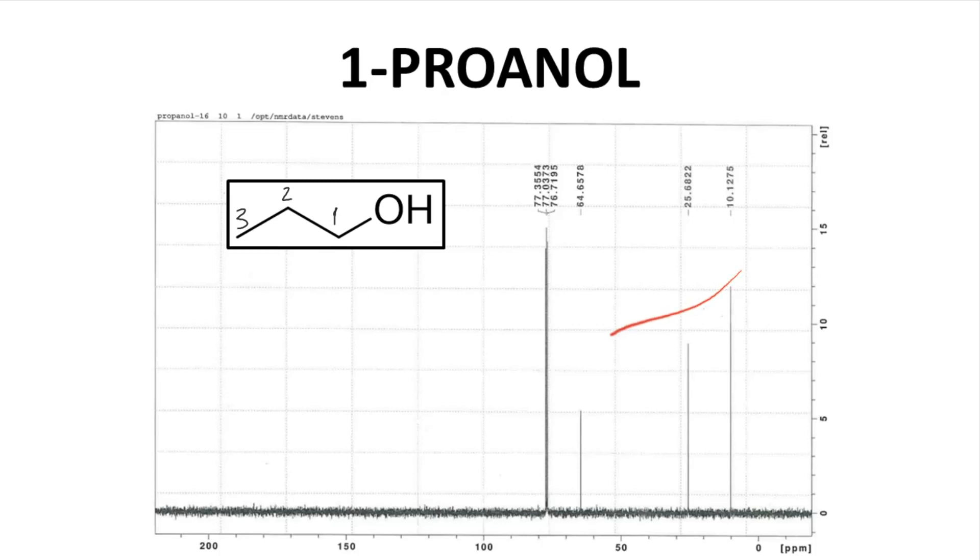We see these three carbons, three peaks, and all these signals have a chemical shift less than 77 as expected based on their hybridization. Note that the signals do not have a uniform intensity, so these three peaks do not have the exact same size and can't be integrated in the same way as a proton NMR spectrum. This is a nice simple molecule with a simple C13 spectrum.